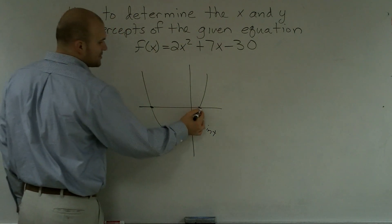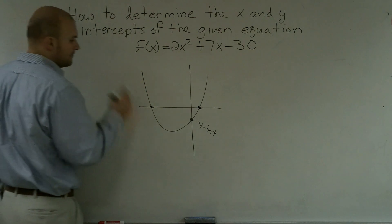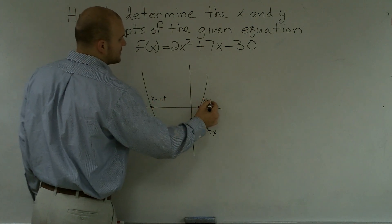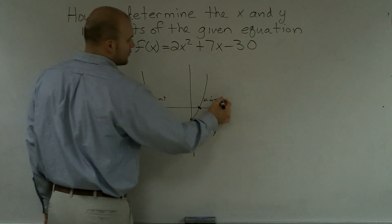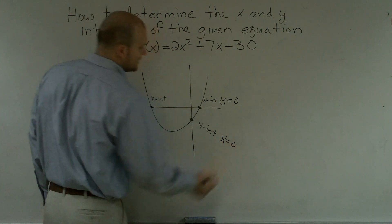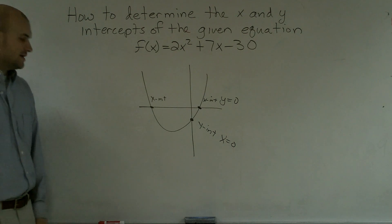And a lot of times on a quadratic equation we'll be given two x-intercepts. Sometimes we can be given none, sometimes we'll just be given one. However, you have to remember when you're given your x-intercepts that your y-value equals 0. And on my y-intercept, my x-value equals 0. That's the main important thing you have to know for your intercepts.